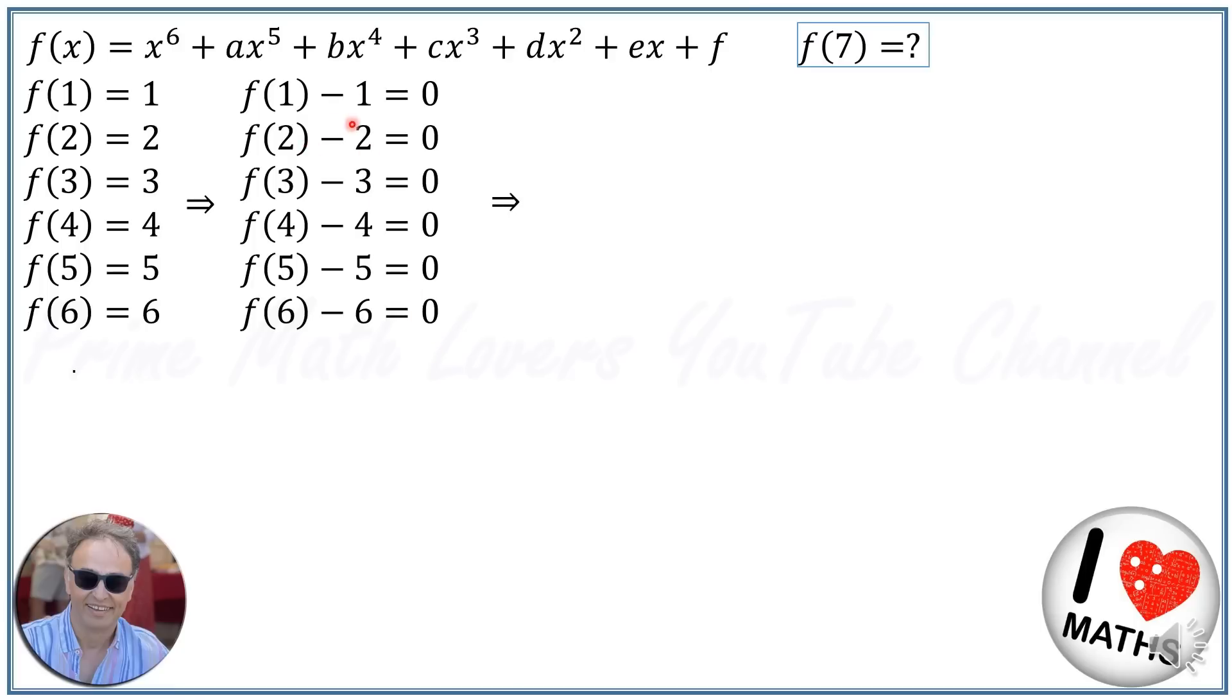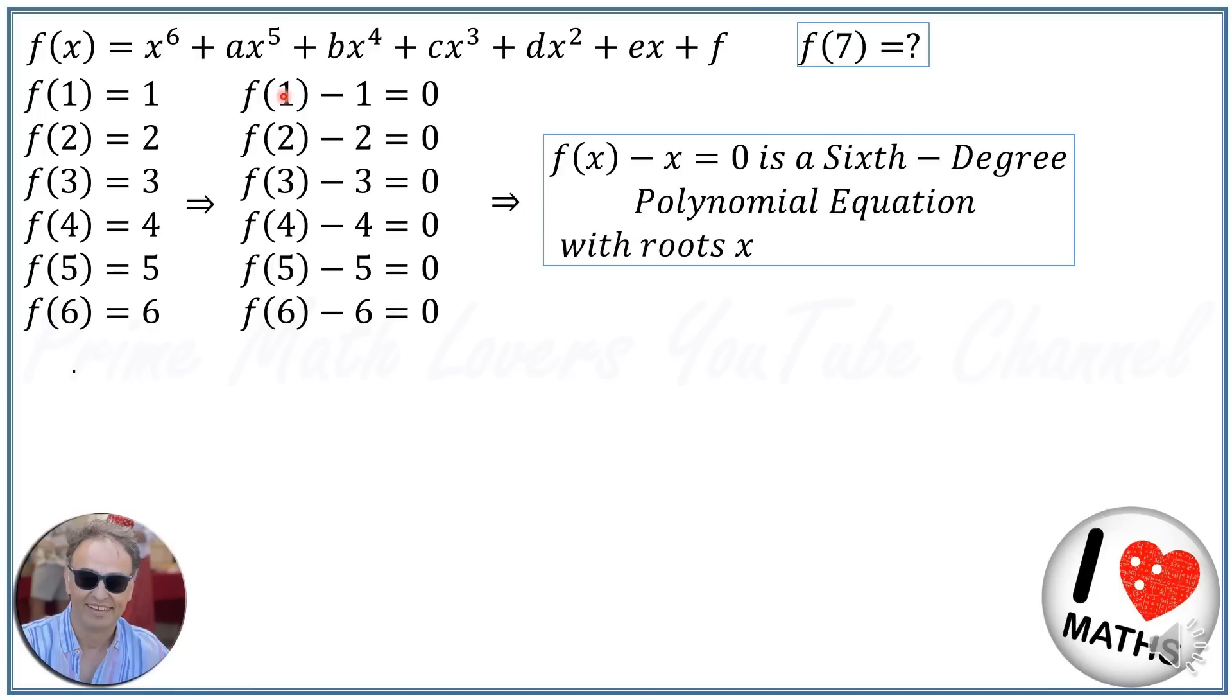This implies that f(x) - x = 0 is a sixth degree polynomial equation with roots x = 1, 2, 3, 4, 5, 6. When we put x = 1 the result is 0, when we put x = 2 the result is 0. This means 1, 2, 3, 4, 5, and 6 are the roots of this f(x) - x = 0 equation.